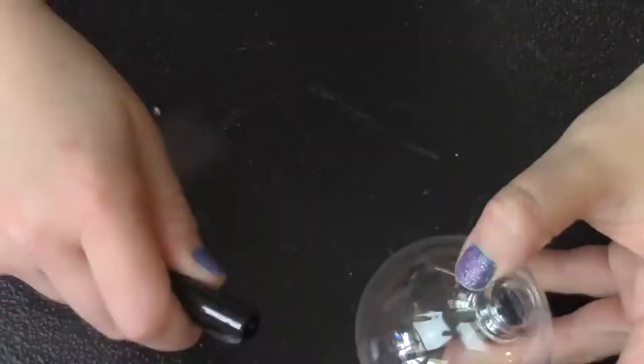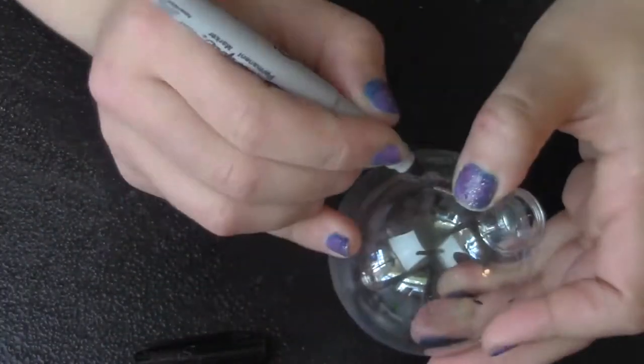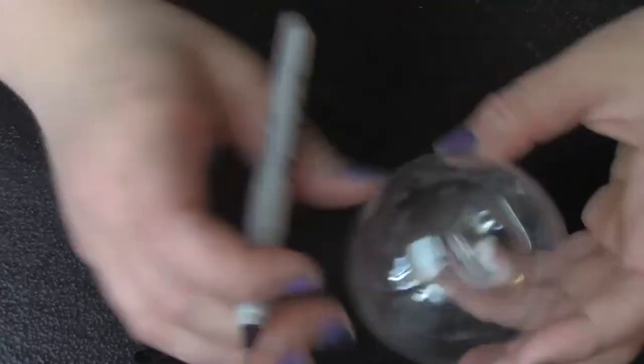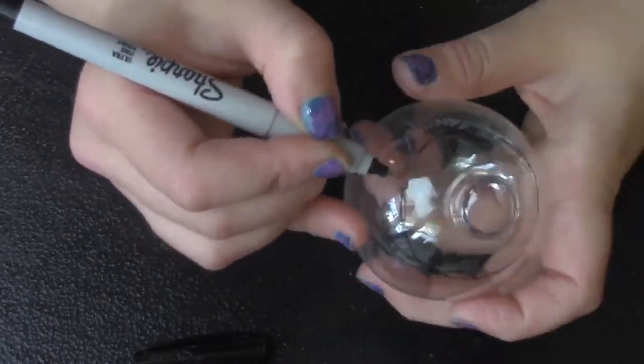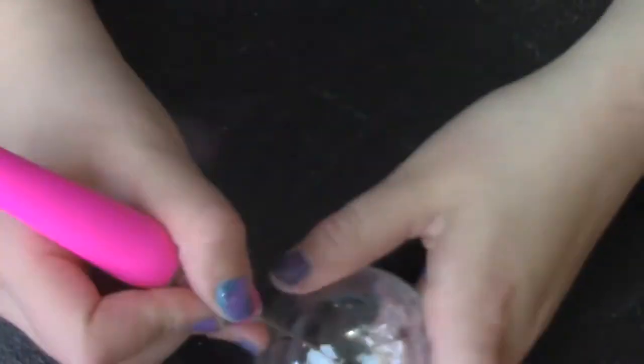Next, we're going to make the dome shape for the log pose out of the Christmas ball. To do this, I use a piece of string that I've cut to four centimeters and I went around the Christmas ball marking where it ended to the opening.